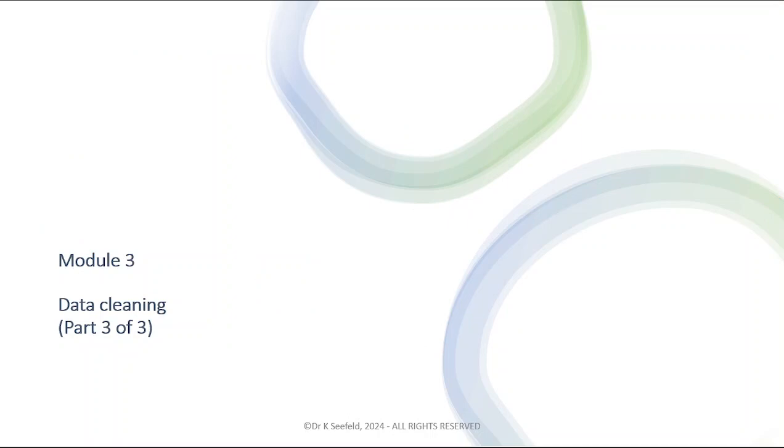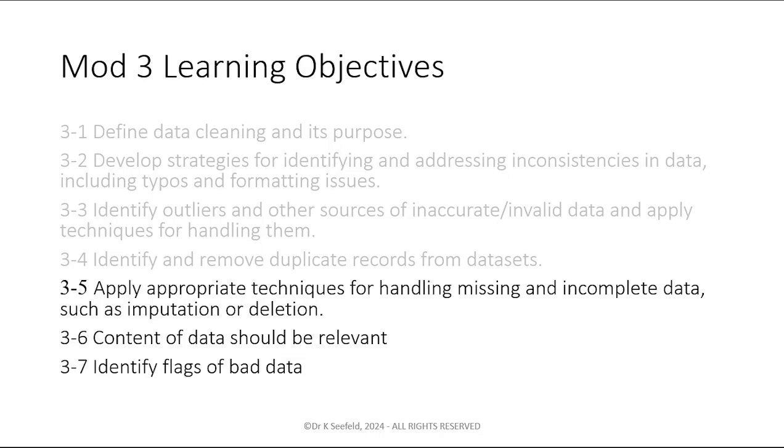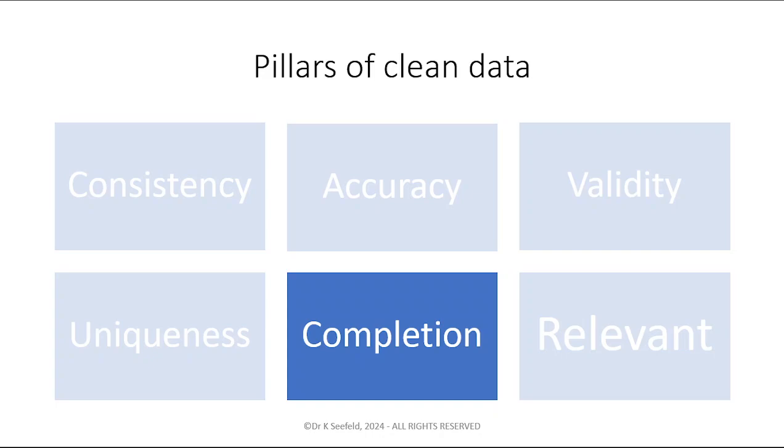Okay, so this is the video for part three of module three and the learning objectives are 3.5, 3.6, and 3.7: to apply appropriate techniques for handling missing and incomplete data, to talk about the relevancy of data content, and to identify flags of bad data.